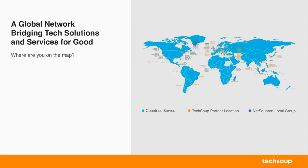A little bit about TechSoup: we are located in 236 countries and territories, and we serve over a million nonprofits around the world, providing either donated or discounted hardware and software.